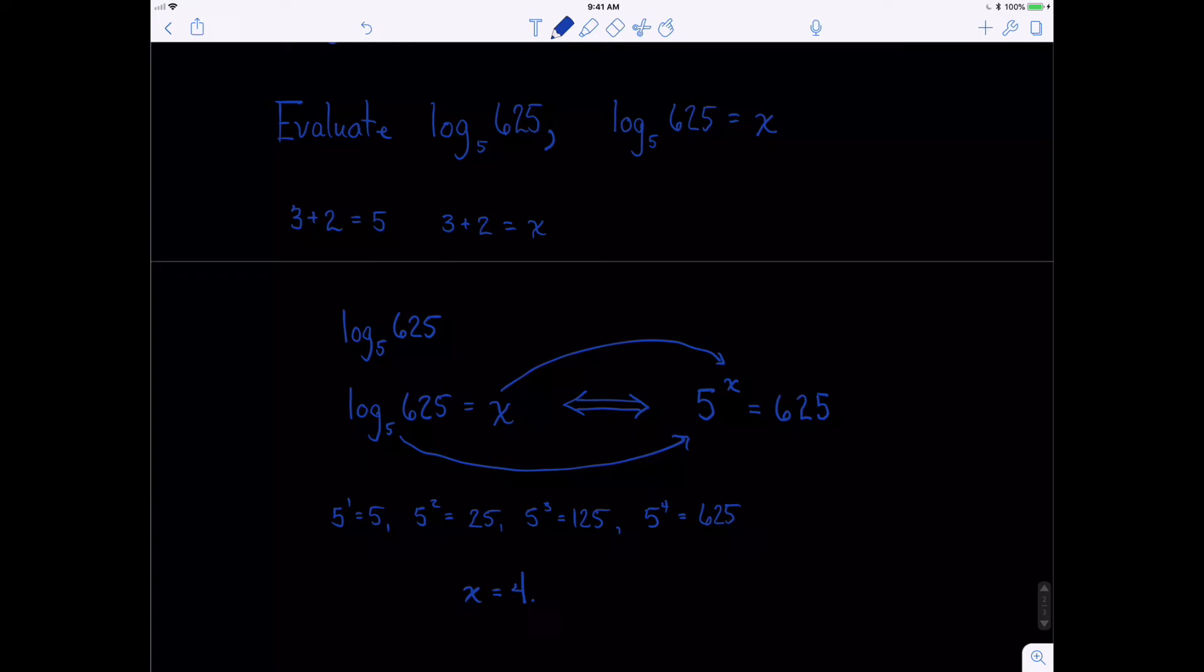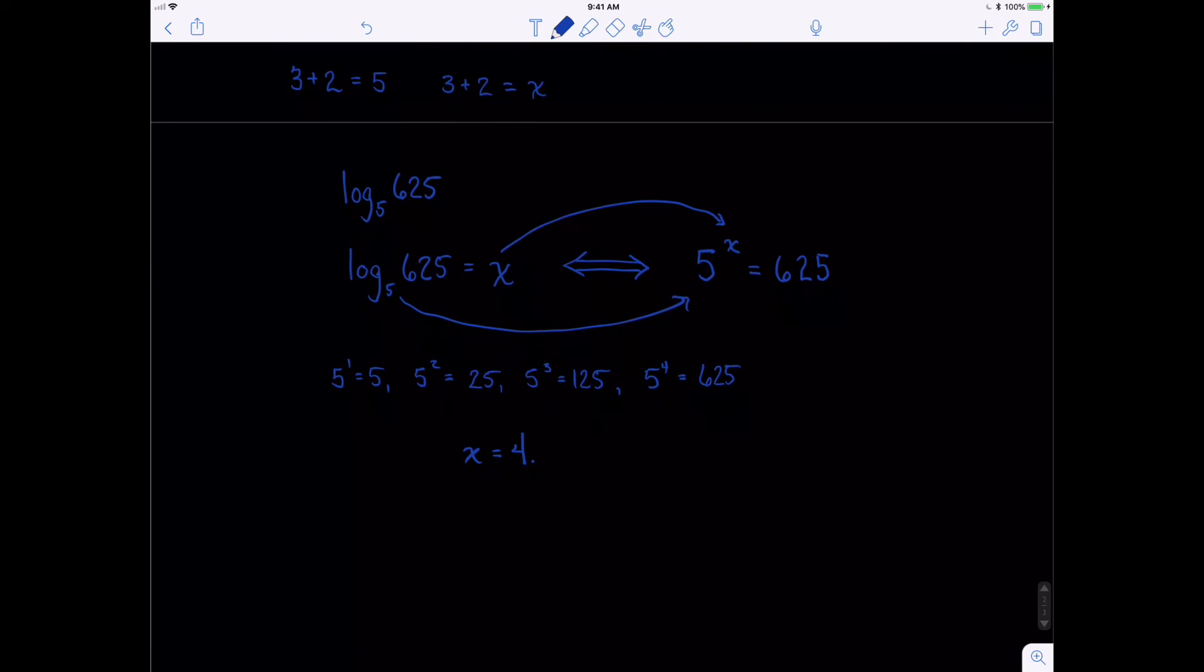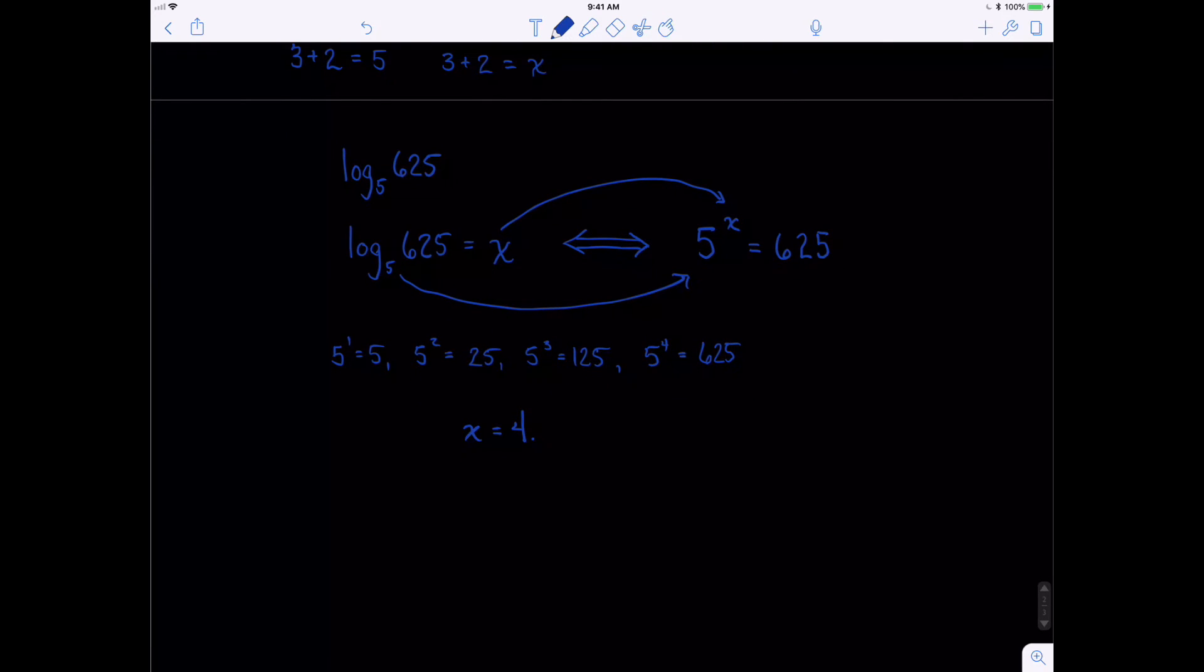And so what we've done is we've evaluated the log by writing it in its exponential form, and then realizing that, oh, 5 to the fourth is 625. And so this is an approach to solving logs when the base, when the number that we're going after, we actually can write in some base, or some base that's easy to figure.